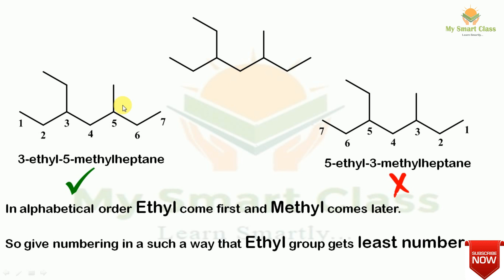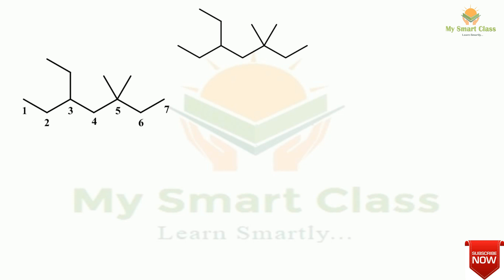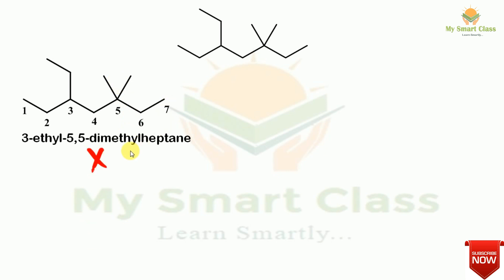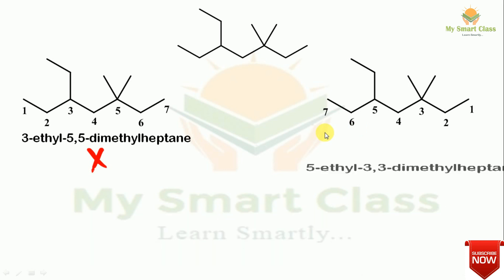This is a simple case of IUPAC nomenclature, but when we talk about more complex cases, let's give the number as previously: 1, 2, 3, 4, 5, 6. If we give the name 3-ethyl-5,5-dimethylheptane, that answer is wrong. So let's give the number from right to left instead.